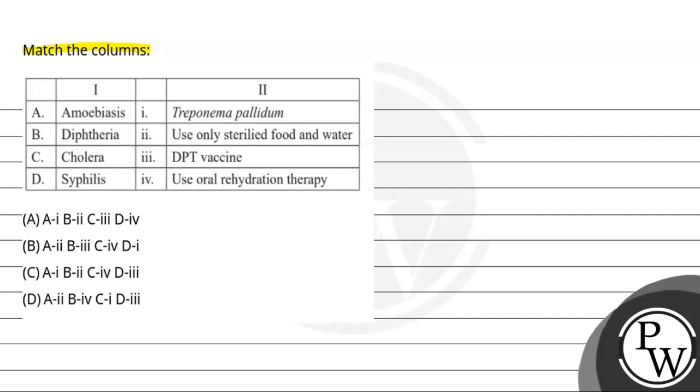Here we have two columns and we will tell you which one is correct. Column first: A Amoebiasis, B Diphtheria, C Cholera, D Syphilis.